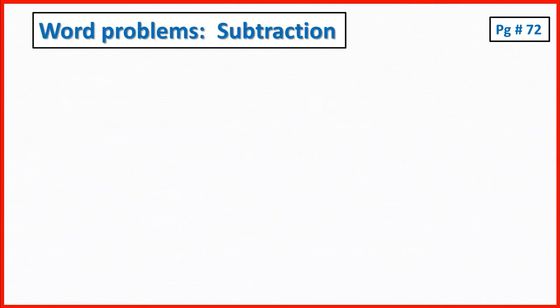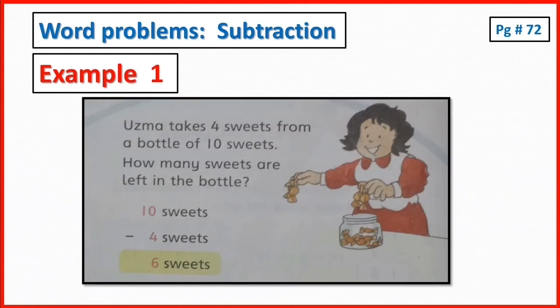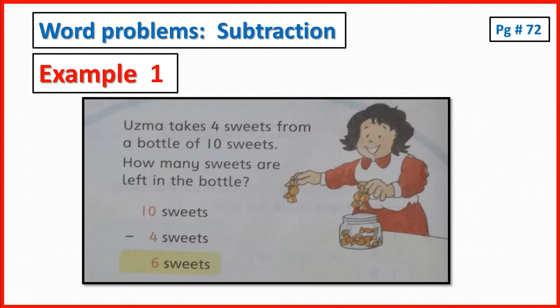Now I am going to do page number 72, word problems subtraction. Here is an example: Uzma takes 4 sweets from a bottle of 10 sweets. How many sweets are left in the bottle? There are 10 sweets in a bottle and Uzma took 4 sweets. There are 6 sweets left in the bottle. That means when 4 subtracts from 10, the number remains 6.